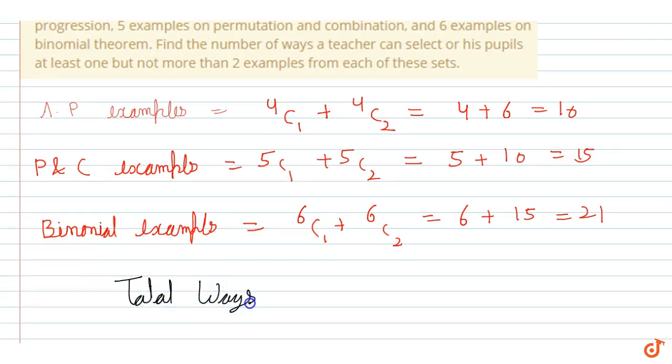Total ways equals arithmetic progression examples which are 10, times P&C which are 15. Since we're choosing all together, we use multiplication. When two processes happen in series, we always use multiplication. When processes happen in parallel, we use addition. So this is in series, therefore we multiply: 15 and then times 21.